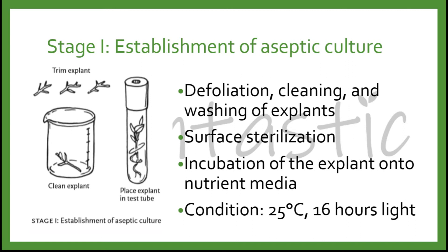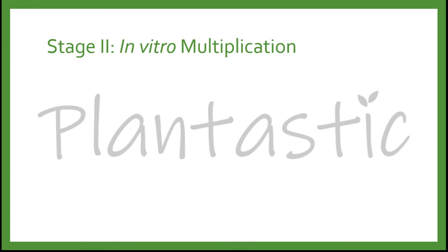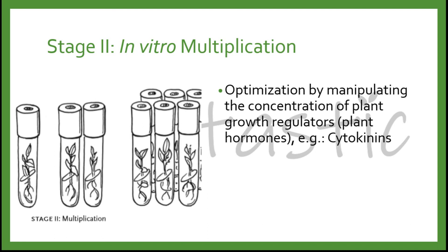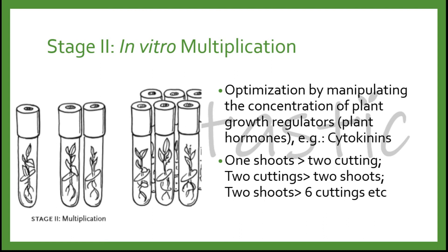Stage 2 is in vitro multiplication, optimized by manipulating the concentration of plant growth regulator (PGR), commonly known as plant hormone. The common plant growth regulator used in this stage is cytokinin, which promotes multiple shoot induction and elongation. From here, exponential multiplication can be achieved.